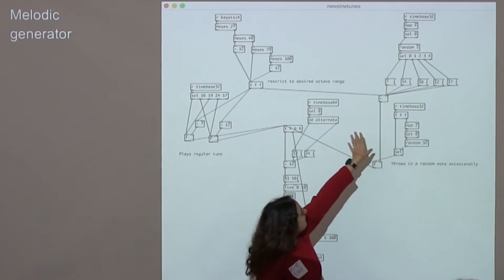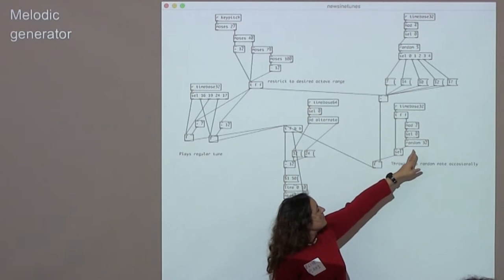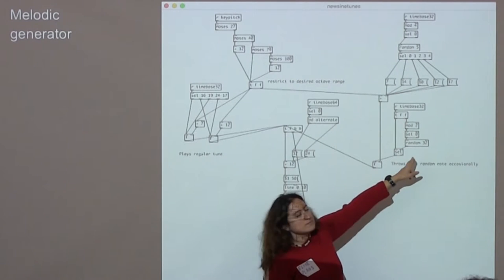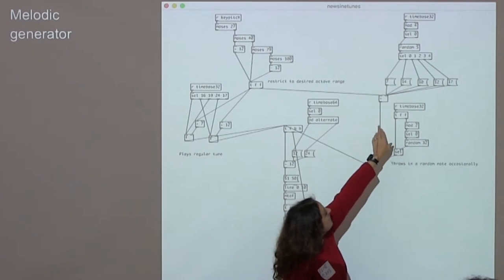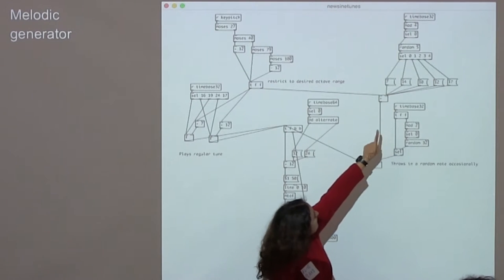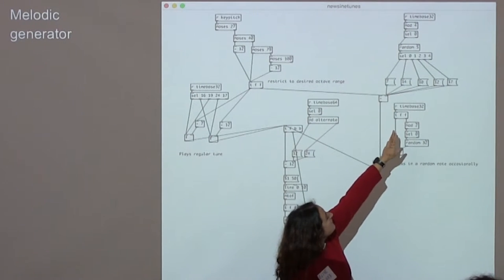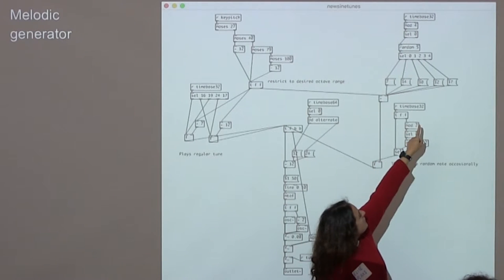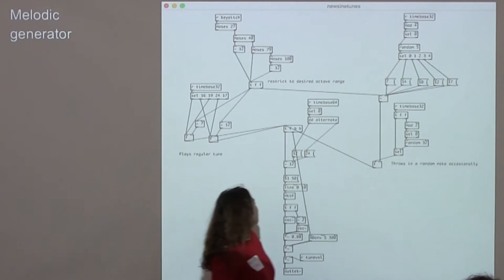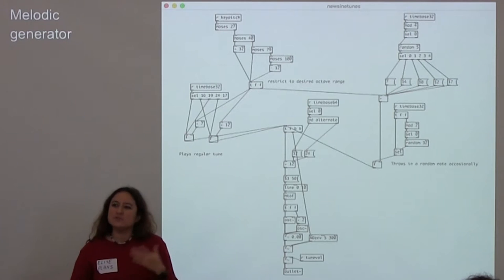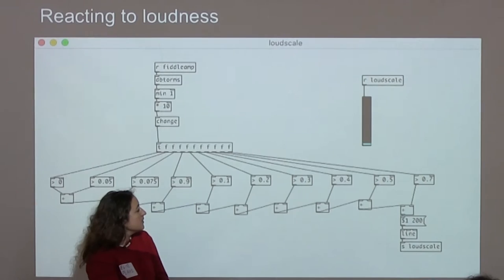On this side, it will randomly throw a note in at a random time in the bar, which will either be a fifth, a ninth, or a seventh — an octave and a fourth. Instead of being the same tune all the time, it just varies a little bit to keep the interest up.